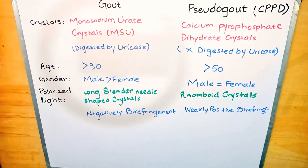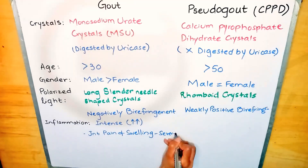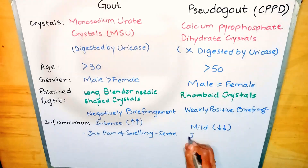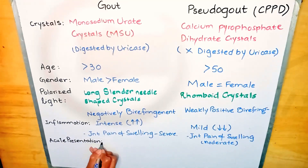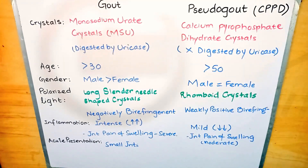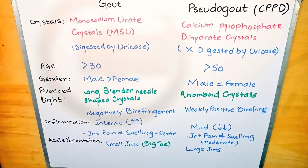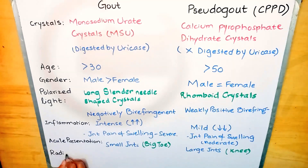Inflammation in gout is intense, which is why the joint pain and swelling are severe, while in pseudo gout it is mild and joint pain and swelling are moderate. In acute presentation, the patient presents with acute monoarthropathy. In gout, it usually affects the small joints, most commonly the metatarsophalangeal joint of the big toe, while in pseudo gout it affects the large joints, especially the knee.